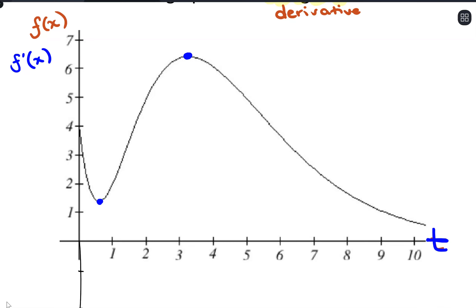So I'm going to take these spots where the tangent line would be flat. We have this minimum value at what looks like about t equals 0.5 or 0.6. So graphing the derivative function, that's where we would be crossing the t-axis. And then we have this maximum value at about t equals 3, maybe a little above, with a maximum value of about 6.5. I'm going to go ahead and mark that on the t-axis as well. So those relative minimum and maximum values show up as coordinates on the t-axis.